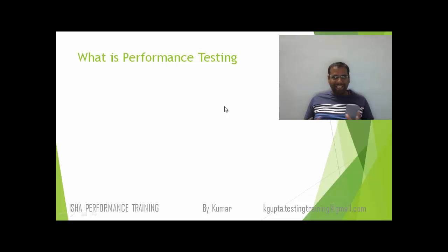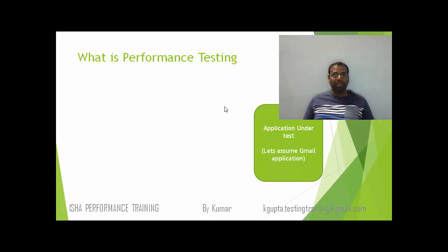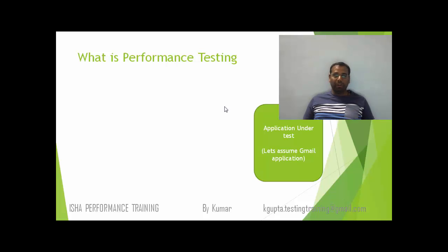Now let's see what exactly is performance testing. Let's consider any application — let's say our application under test is the Gmail application. There is a terminology for that: we call it AUT or SUT. SUT is called system under test, AUT is application under test. Both mean the same thing — the application that you are actually testing or about to do performance testing on.